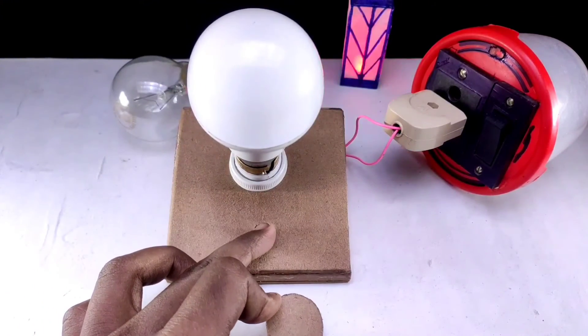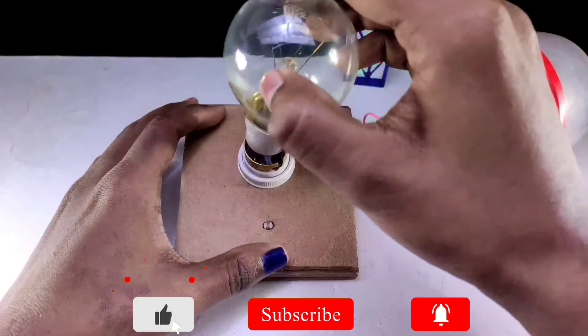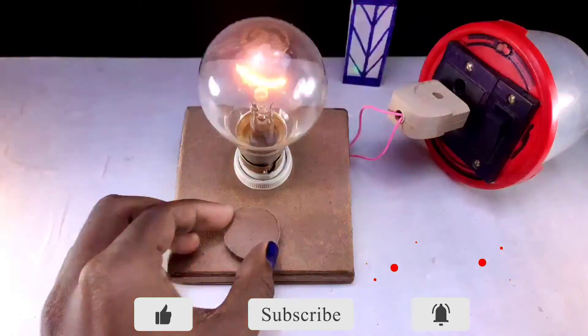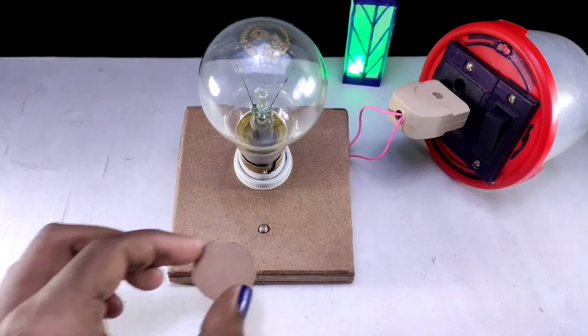I touched and saw that there is no current in the MDF board and LDR. Guys, the camera quality is not good, so it looks like the bulbs are blinking, but in fact the bulbs are not blinking.